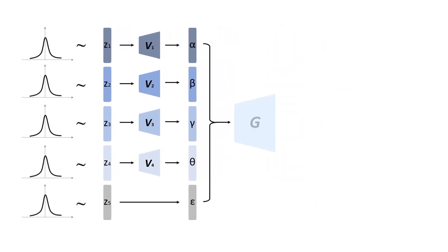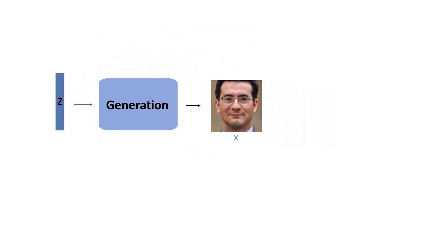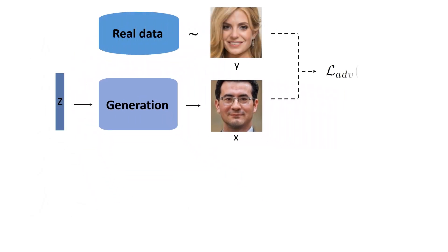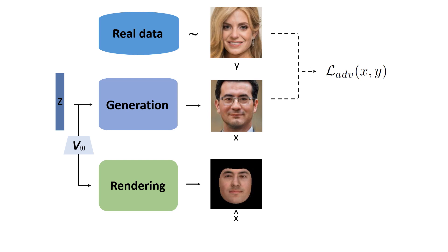After that, latent vectors in lambda space are fed into a generator G for face image generation. To generate realistic images, we first use the standard adversarial loss. In addition, we want face images to be generated following the desired properties of the lambda space variables. Therefore, we render a face image using the lambda space variables and apply imitative losses, which enforce the generated image to mimic the rendered one. The imitative losses minimize both pixel-level differences and perceptual distance.